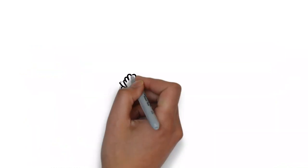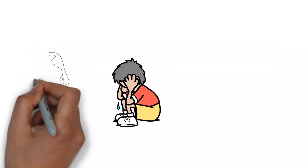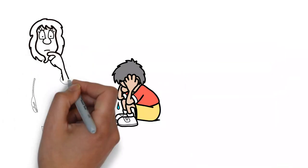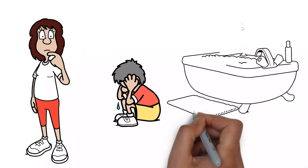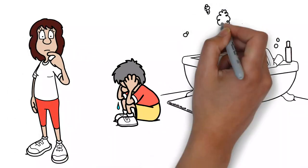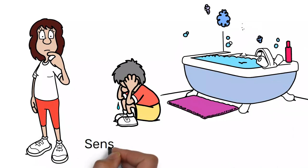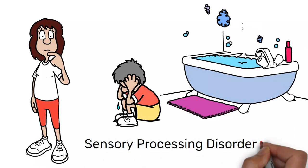Bath time can be a stressful experience for both your kiddo and you. Autistic kiddos can have trouble with things like personal hygiene, cleaning activities, and sensory processing disorder or SPD, which can exacerbate these challenges.